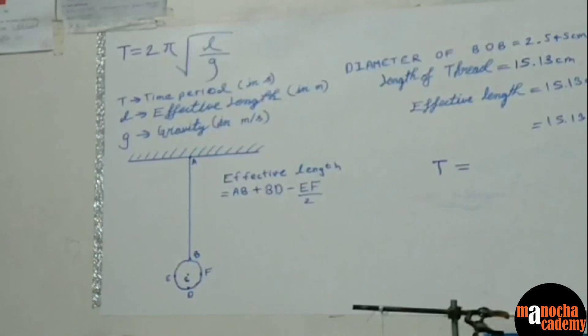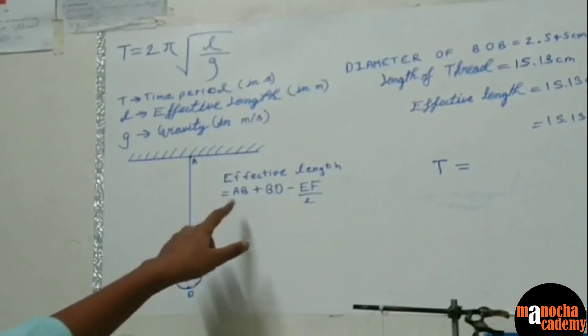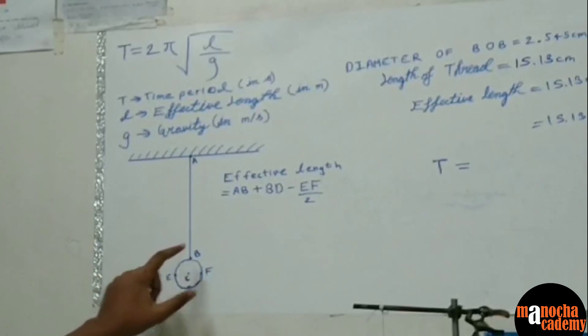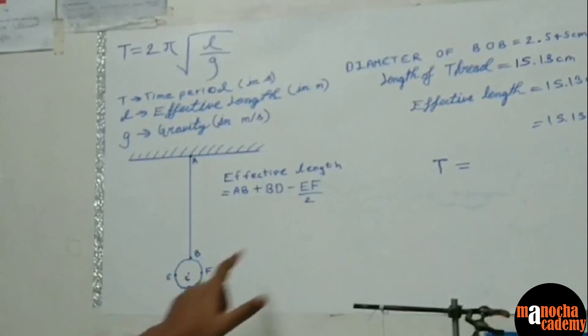The radius can be written as diameter minus the half of diameter. So the effective length is equal to AB, the length of the string plus BD, which is the diameter minus EF by 2, which is the radius.